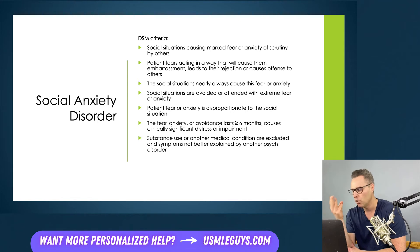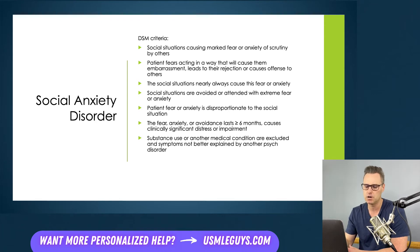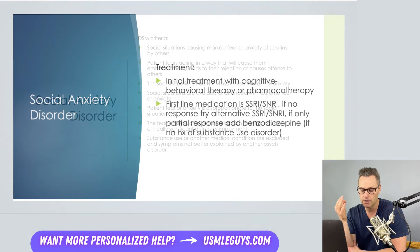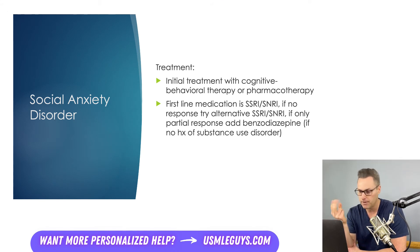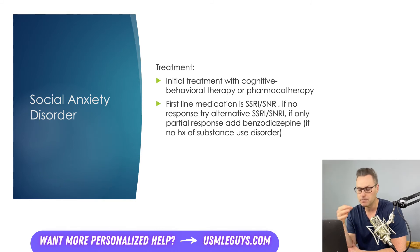The fear, anxiety, or avoidance must persist for six or more months and cause clinically significant distress or impairment. As always, rule out substance use or any other medical condition that would better explain the symptoms before diagnosing social anxiety disorder. Treatment includes cognitive behavioral therapy or pharmacotherapy — first-line medication is an SSRI or SNRI. If no improvement, switch to a different SSRI. If only partial improvement, a benzodiazepine can be added, as long as the patient has no history of substance abuse.